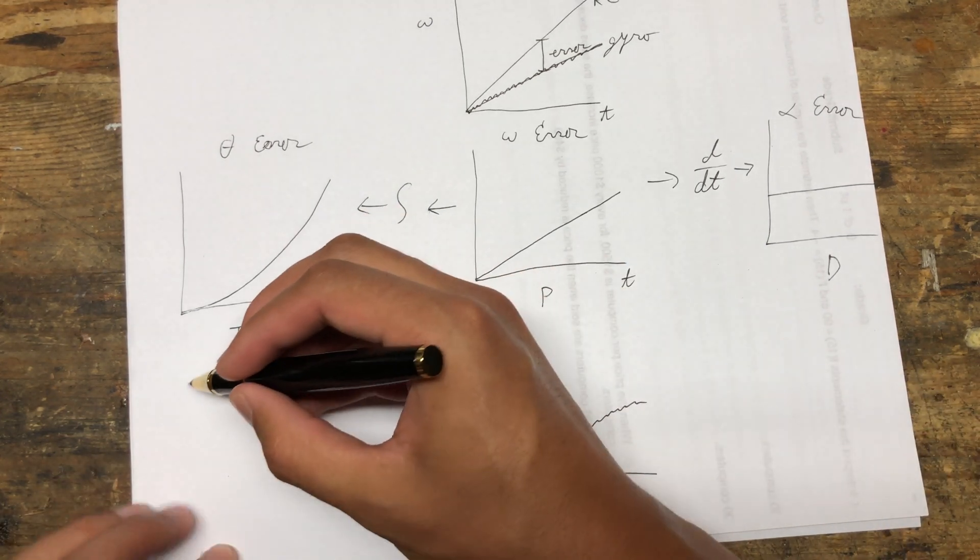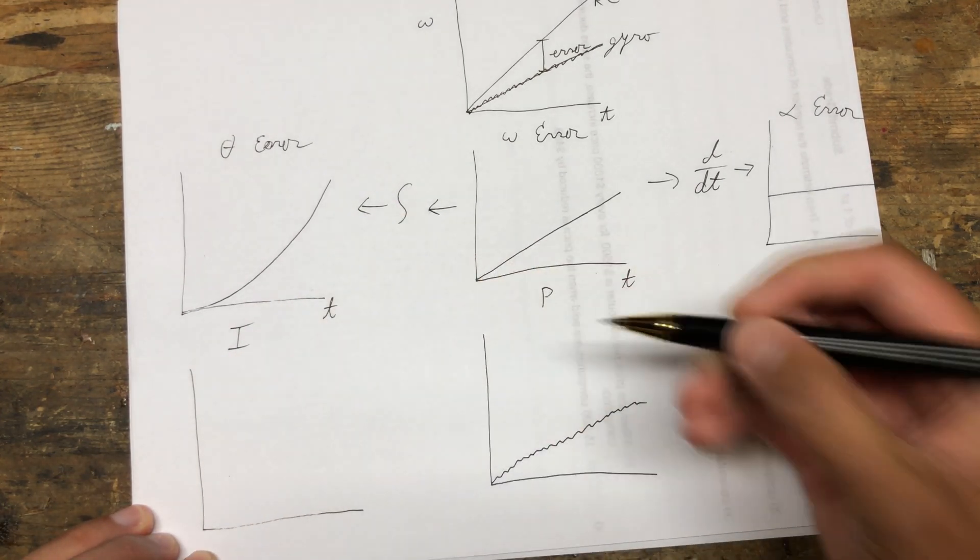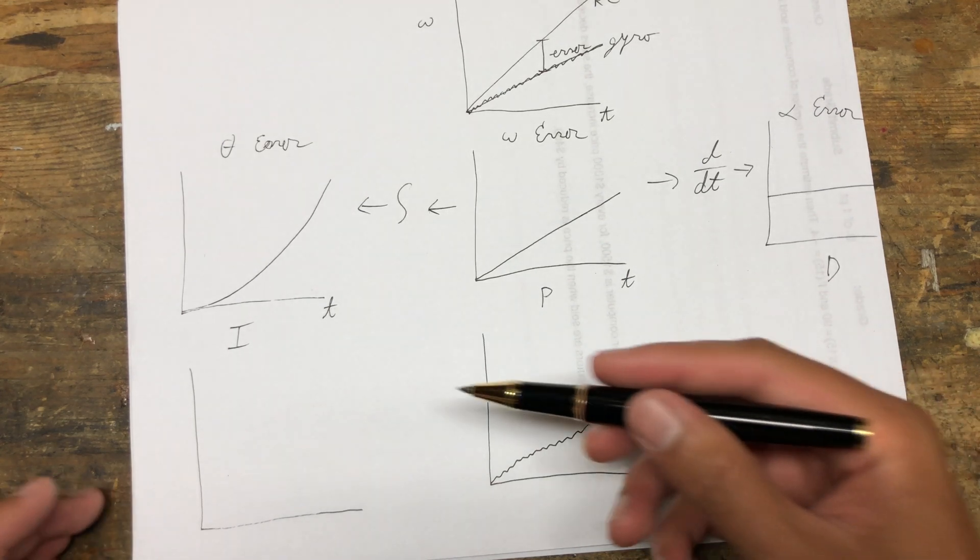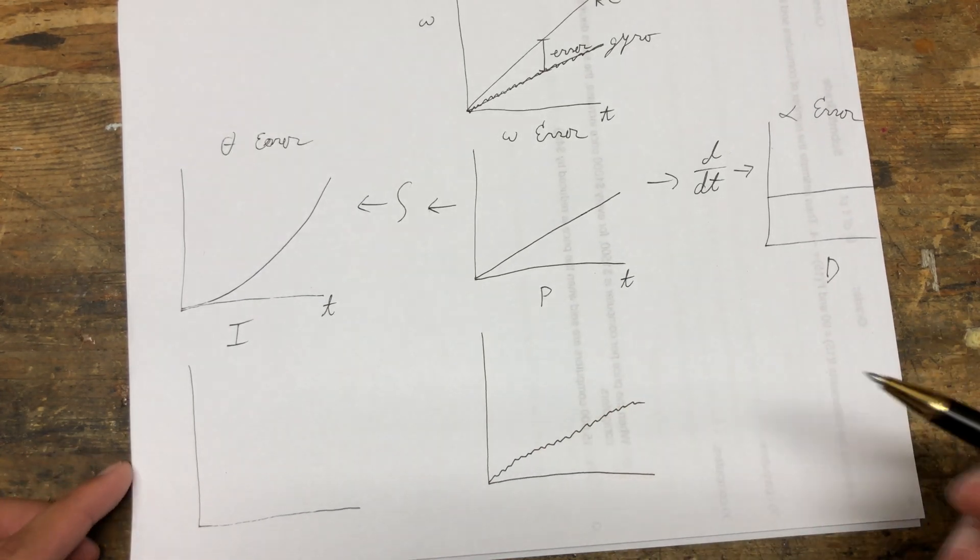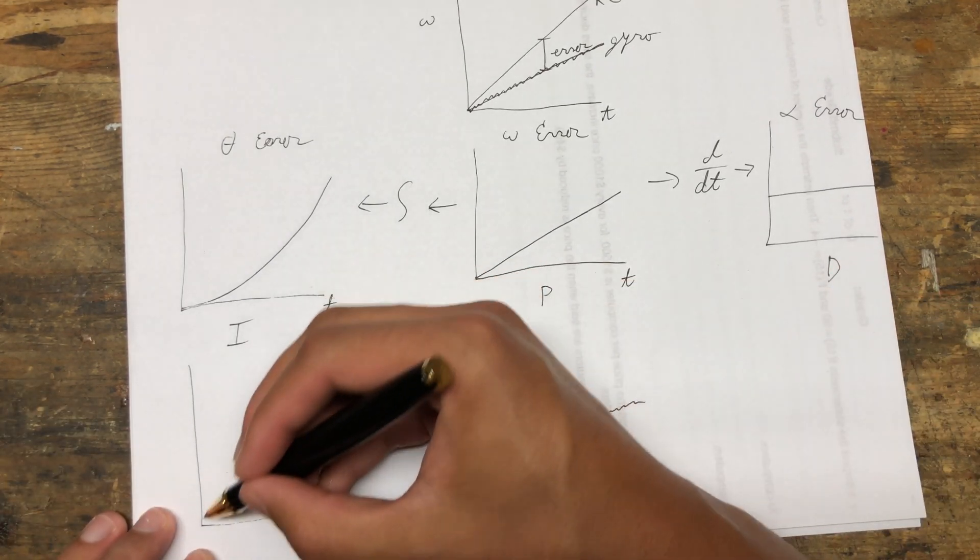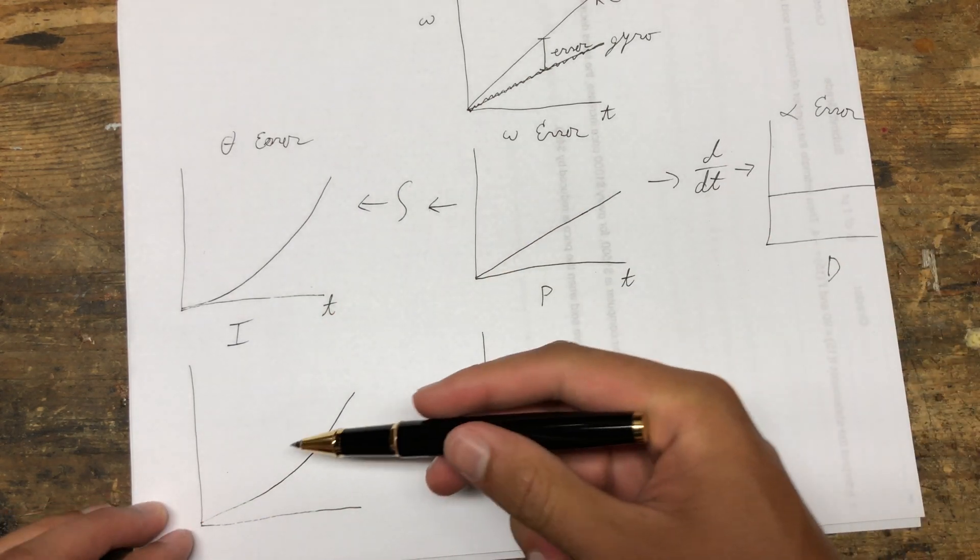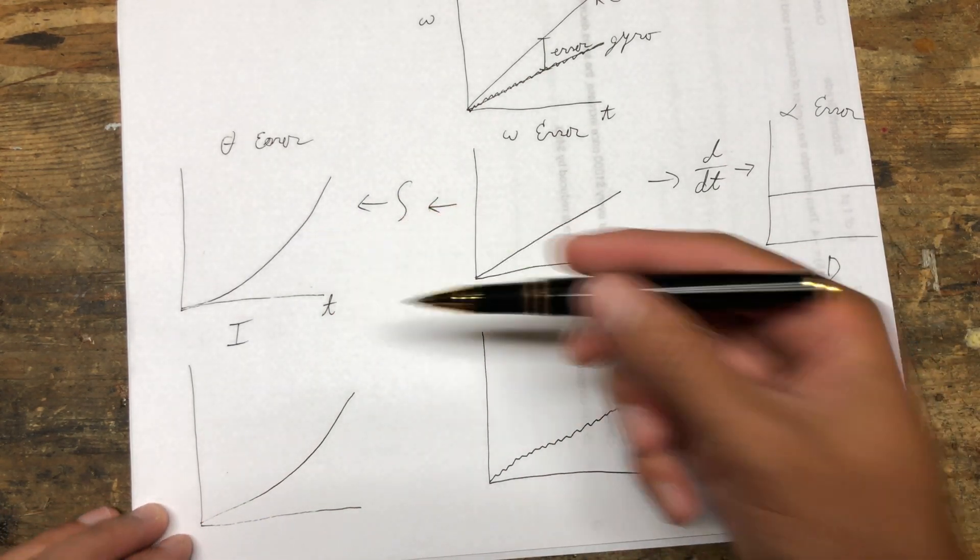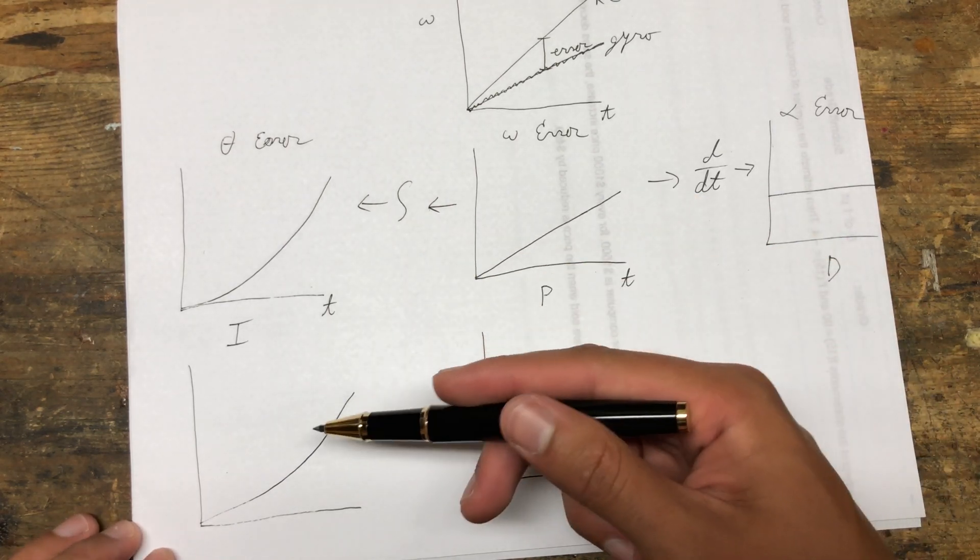When we integrate to figure out our I-term, we're looking at area under the curve. When you take the integral to get the area under the curve, it actually has a bit of a smoothing effect. The I-term is going to look actually very similar to how it did before we introduced a little bit of noise to the system.